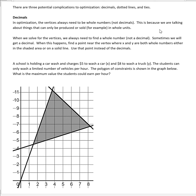Now that we've been through optimization from start to finish, there are a couple of complications we need to talk about. Today we're going to cover two of them. The first is what happens when a vertex — one of the corners of your polygon of constraints — is a decimal. Luckily, that's a complication that's fairly easy to resolve, so we'll talk about that one first.